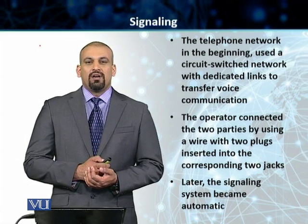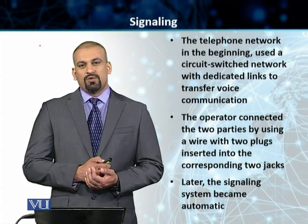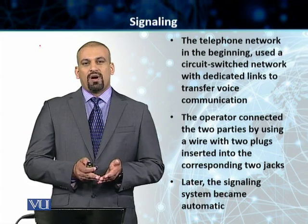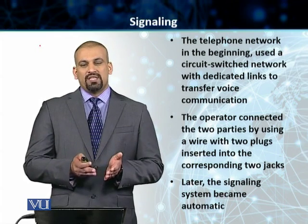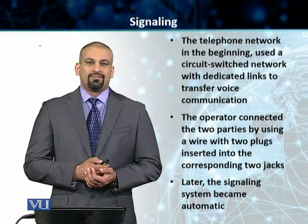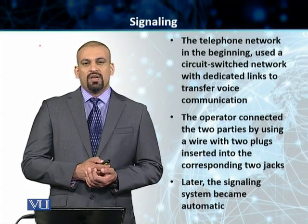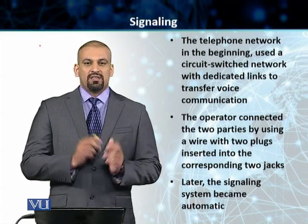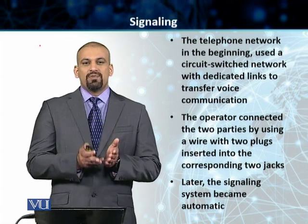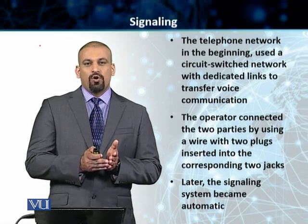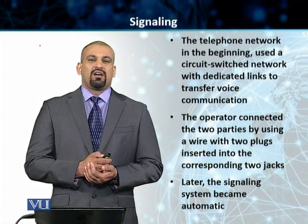When the telephone call was complete and the connection was no longer required, one of the parties would make a call to this operator to actually disconnect the connection. This was our first type of signaling network, in which we did in-band signaling. In-band signaling is when you use the same circuit for your signaling or control information as well as your data.